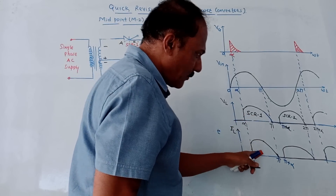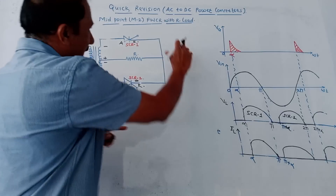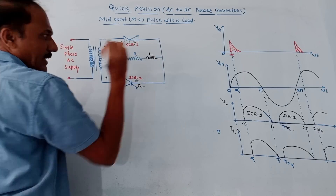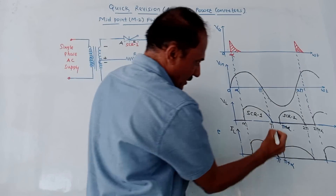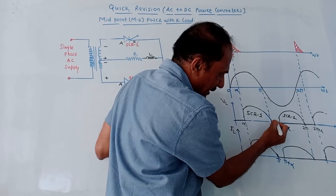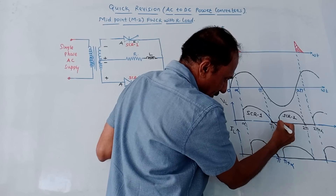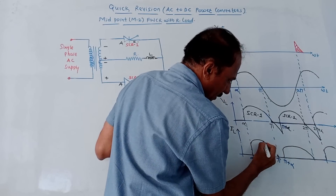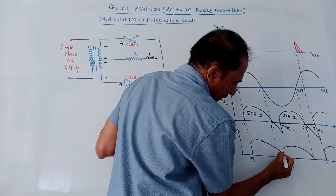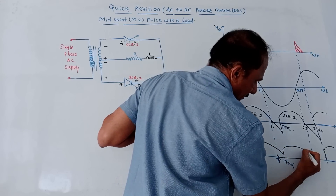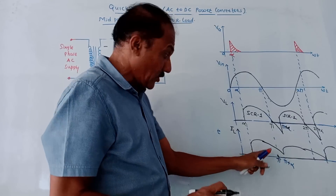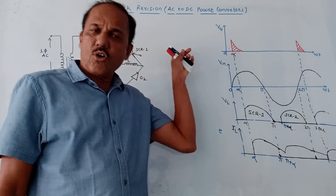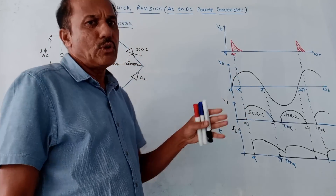The output current waveform remains the same as the voltage waveform for R load. For RL load, we connect one inductor and the major change in the waveform is that conduction continues till pi plus alpha due to inductor action. For the current waveform with inductive load, it will not end at pi but will continue till pi plus alpha, and the current remains almost constant — this is the waveform for RL load. Next is the semi-converter, also called the single phase full wave half controlled bridge converter.